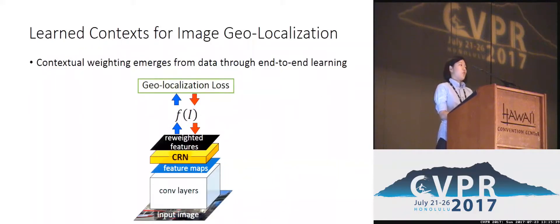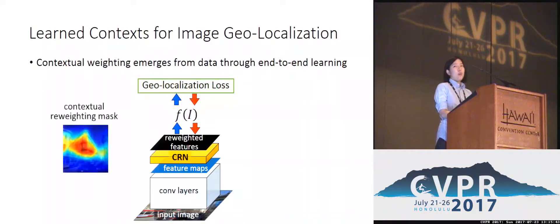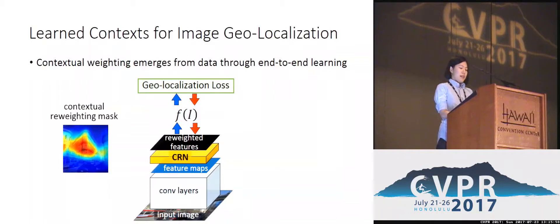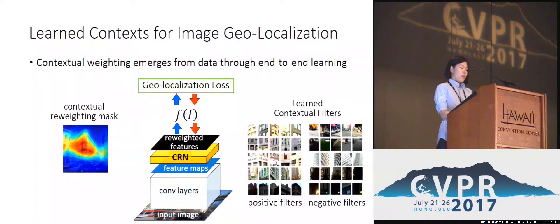If we were using a supervised prior for weighting, we would need to annotate millions of images accordingly, without being sure that such supervision is actually optimal for the end task. Instead, we let the network discover an optimal prior through end-to-end learning. In order to minimize the geolocalization loss, the CRN needs to better produce the weighting mask, and it learns in which context certain features should be emphasized or suppressed.